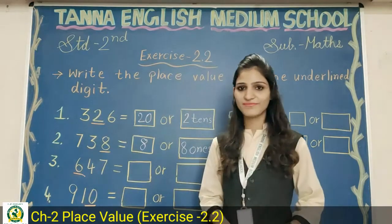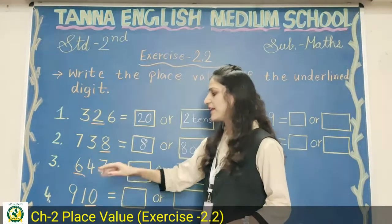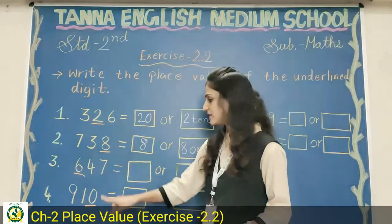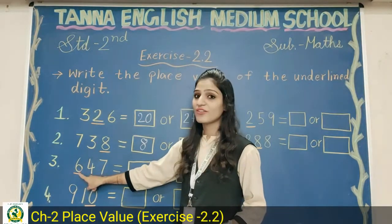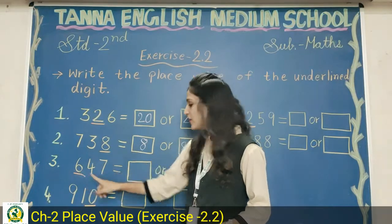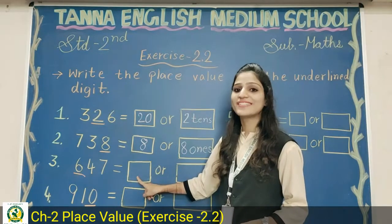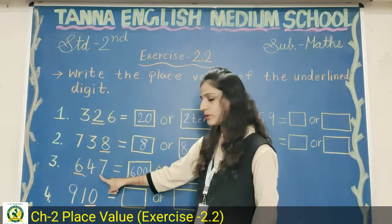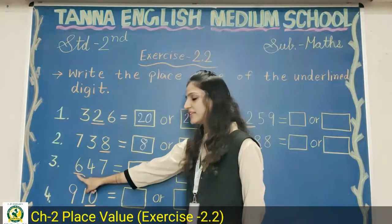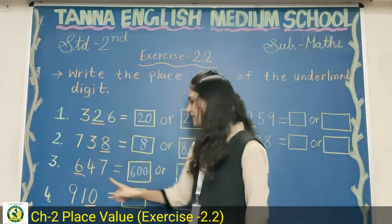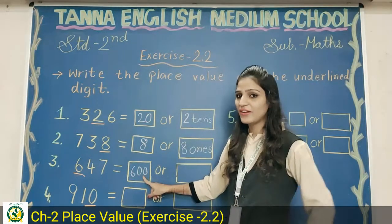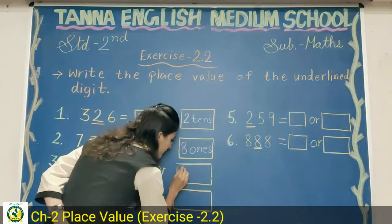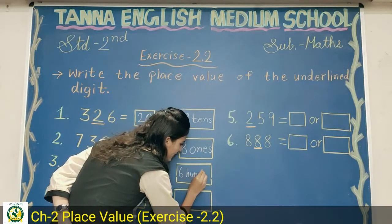Number three: six hundred and forty seven. The underlined digit is six. Ones, tens, hundreds — six is at the hundreds place. So in the first box, write six hundred — six with two zeros, because there are two digits after it. Six is at hundreds place, so write six hundred. And in the second box, write 'six hundred' — h-u-n-d-r-e-d.